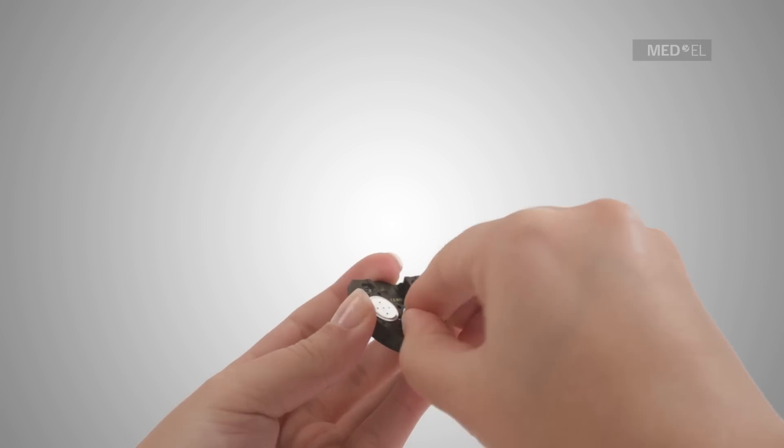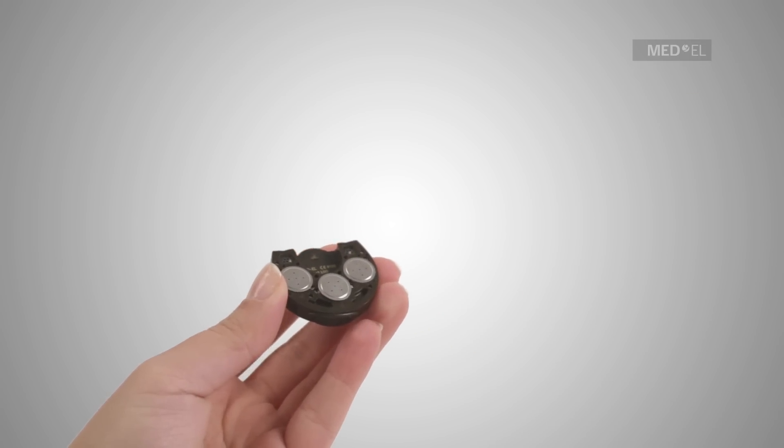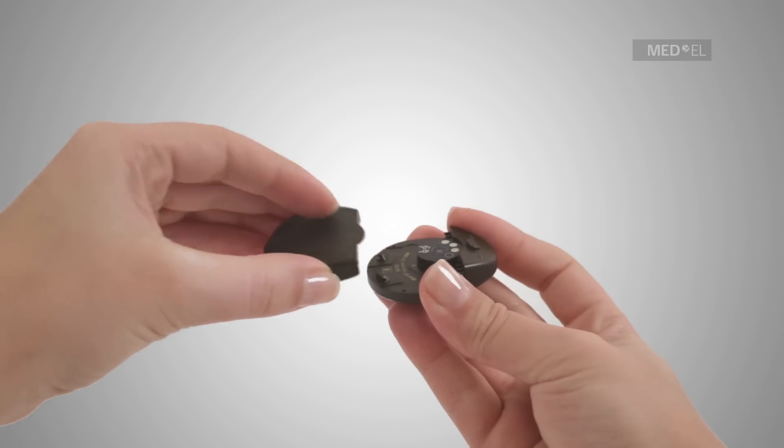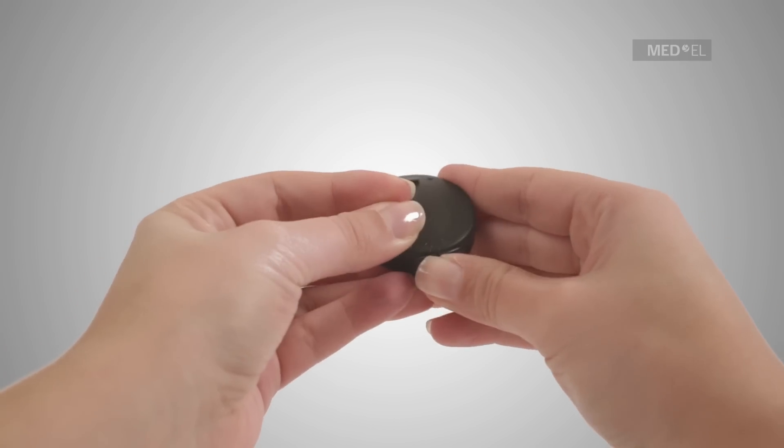To reattach the battery pack once the batteries have been changed, use the gently landing airplane method. The battery pack should come in at a slight angle against the back side of the control unit.